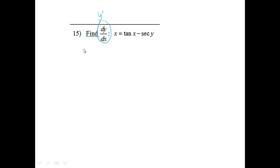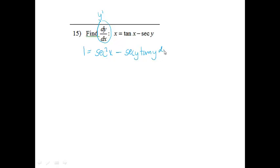On the left side, the derivative of x is 1. On the right side, the derivative of tangent x is secant squared x, knowing my formulas. Then minus the derivative of secant y, which will be secant y tangent y, but I also have to include dy/dx because I am taking the derivative of y with respect to x.